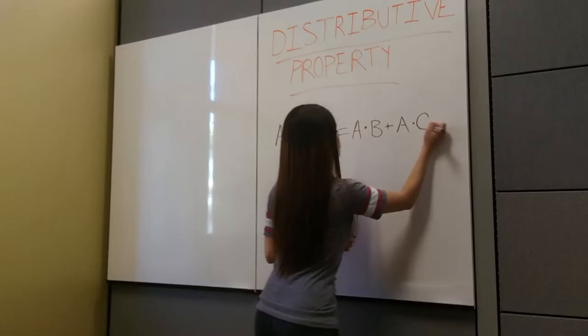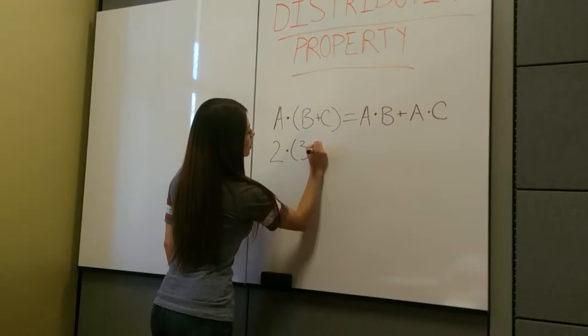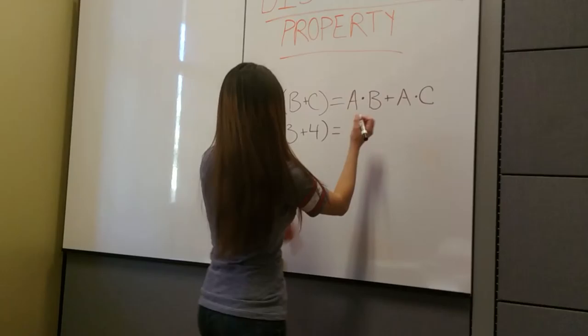So what we're going to do is just plug in the numbers and then we're going to see that they'll both equal the same number. So we'll put 2 for a and we'll do 3 for b and 4 for c. And we'll do the same for the other side. Plug in the numbers.